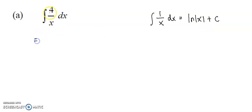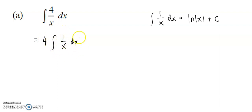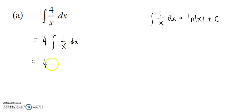For this question, there is a coefficient 4. So I can factor out the 1 over 4. Then you can see very directly, this function can be integrated by this formula. Just write down 4, then integrate 1 over x with respect to x, you get log x plus constant c. That's it.